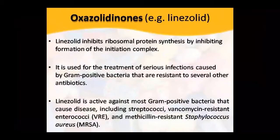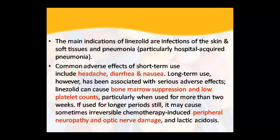Next drug is linezolid — an oxazolidinone. It inhibits ribosomal protein synthesis because the initiation complex cannot form with the ribosome, so protein synthesis does not occur. This is used for serious gram-positive infections where other antibiotics have not been effective. It is active against gram-positive bacteria including streptococci, enterococci, and MRSA.